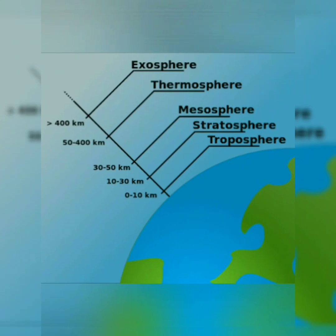The next gas is oxygen. Oxygen helps us for breathing, and it is present in abundant quantities. Another important function: oxygen forms ozone molecules that constitute the ozone layer in the upper part of the atmosphere. The ozone layer absorbs harmful ultraviolet rays coming from the Sun.